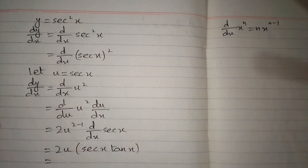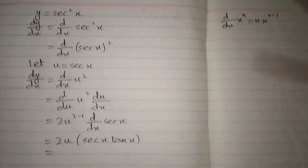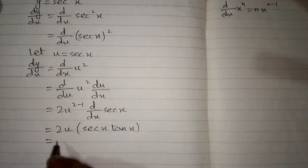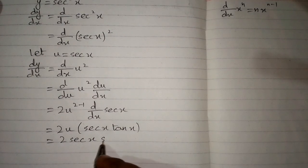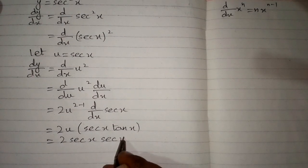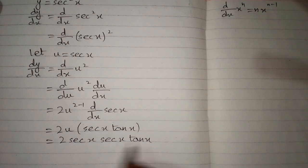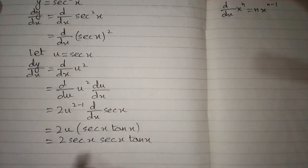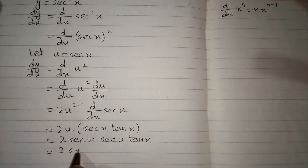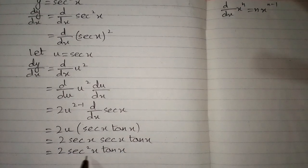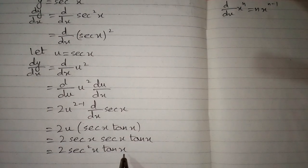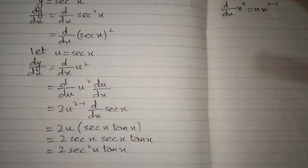Now we substitute back the value of u = sec(x). So we have 2 times sec(x) times sec(x)tan(x), and sec(x) multiplied by sec(x) is sec²(x). Therefore, the final answer is 2 sec²(x) tan(x).